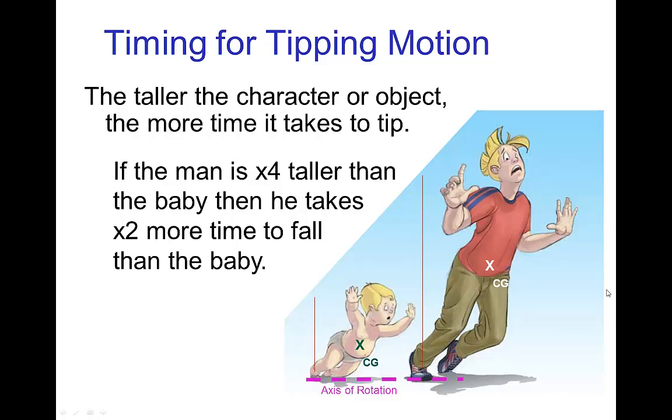Now, this is understandable if you think about the fact that the man basically starts higher up off the ground. If we have two objects, one that's higher off the ground and one that's lower to the ground and release them at the same time, the object that is higher is going to take longer to reach the ground than the object that starts lower. That's all we're seeing here.